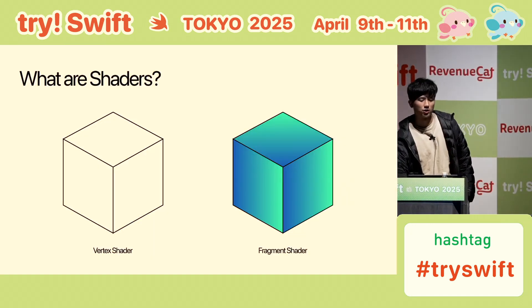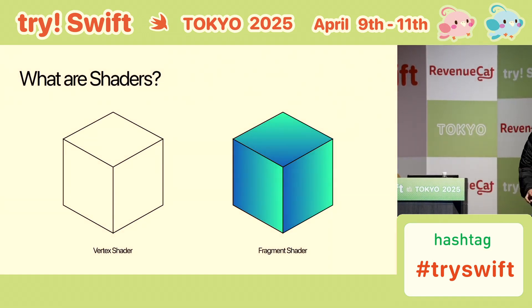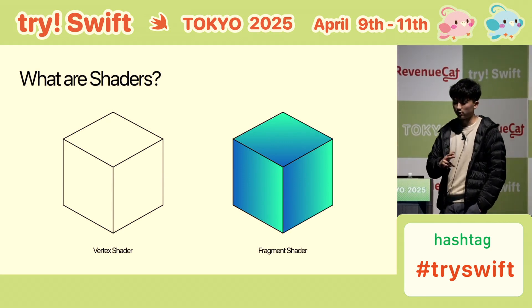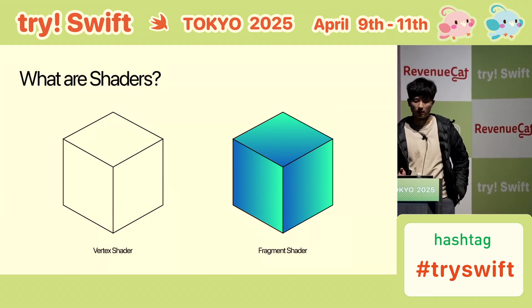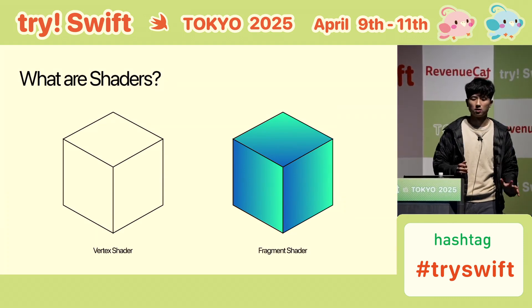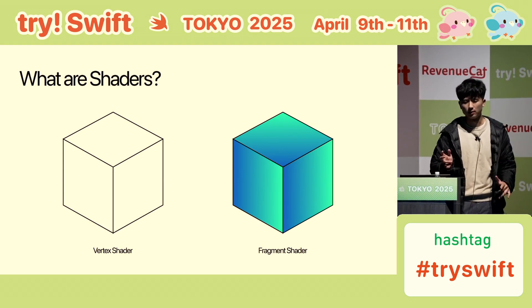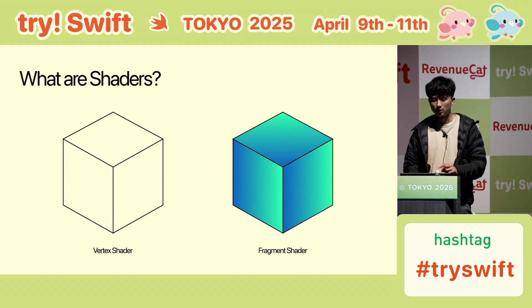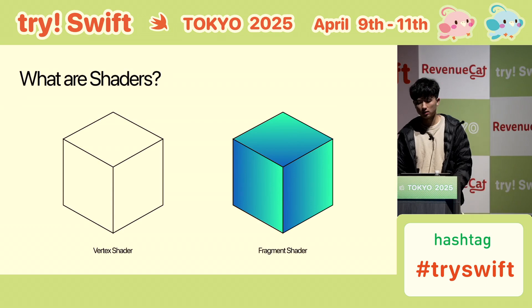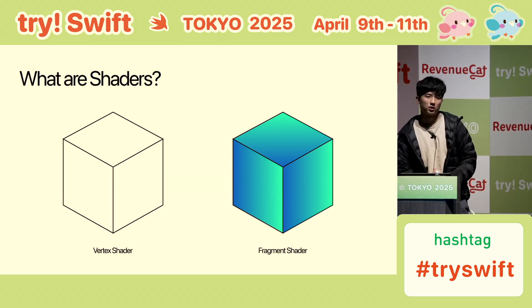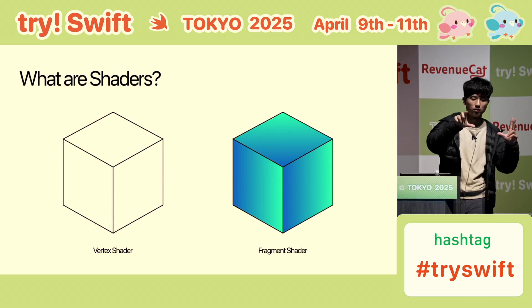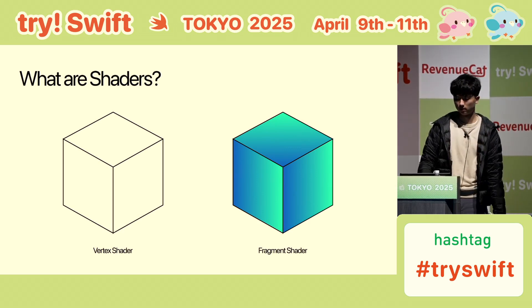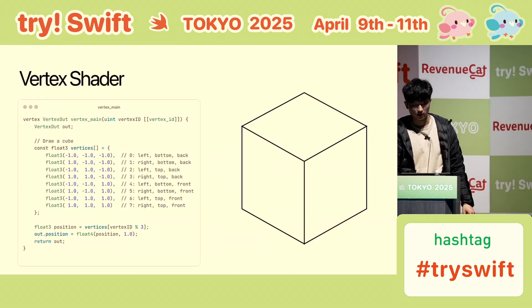So what are shaders? Usually you can divide shaders into two groups: the vertex shader and the fragment shader. The vertex shader basically defines the mesh of the object — it's like a wireframe. Then to apply color and lighting effects you use a fragment shader, and the fragment shader basically runs on each face — for every single pixel.